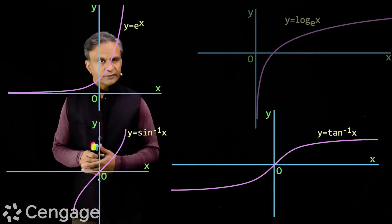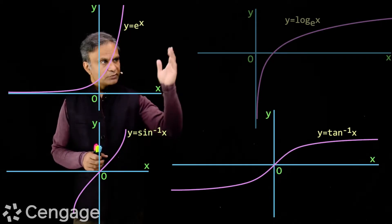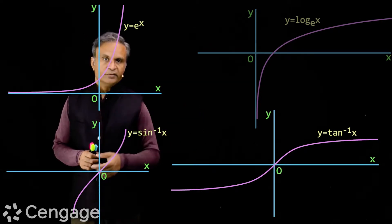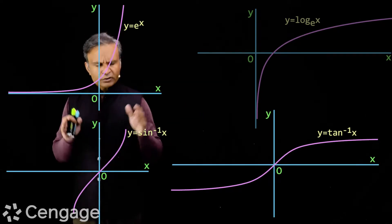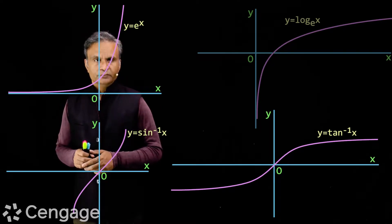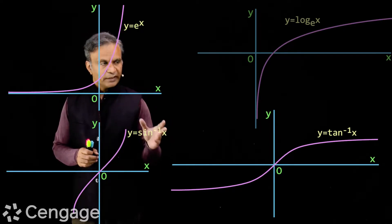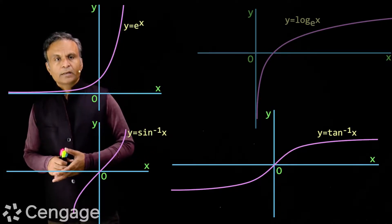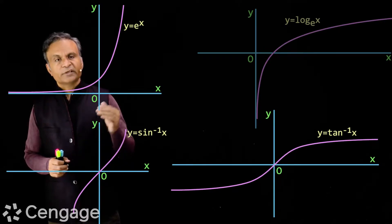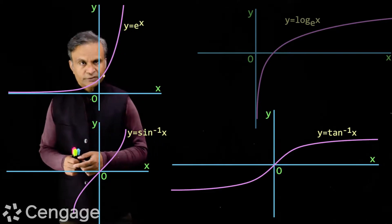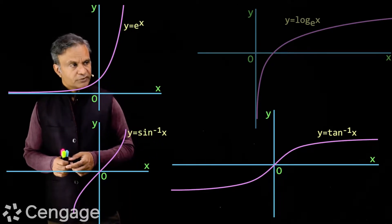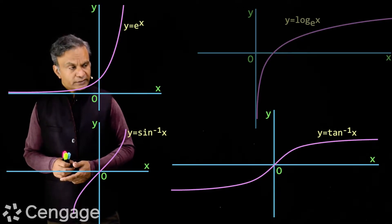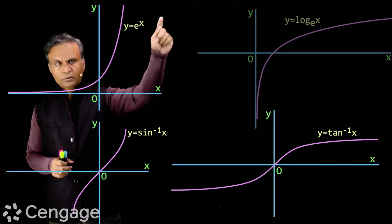Here we have graphs of some functions: y = e^x, y = log x, y = sin⁻¹x, and y = tan⁻¹x. In all these graphs one thing is common — in each case the value of the function increases with increase in value of x. In each case the graph rises from left to right.